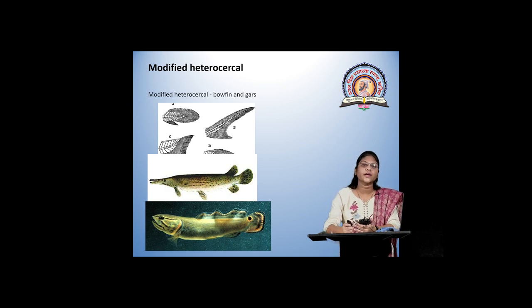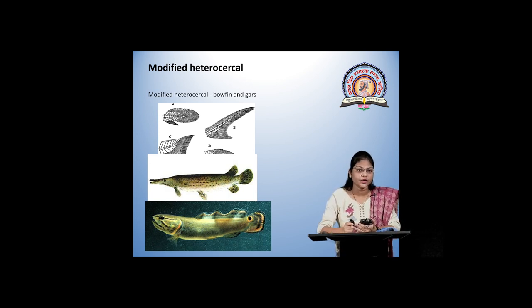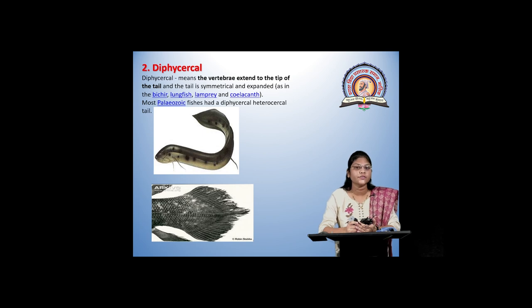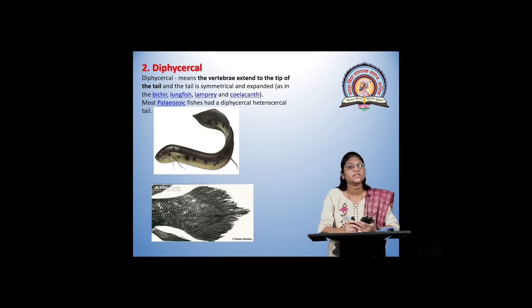Next is the modified heterocercal, where some modifications can be seen. Next is the diphycercal, in which the vertebrae extend to the tip of the tail, so it looks symmetrical — both lobes look symmetrical. These are seen in lungfishes, lampreys, and coelacanths.